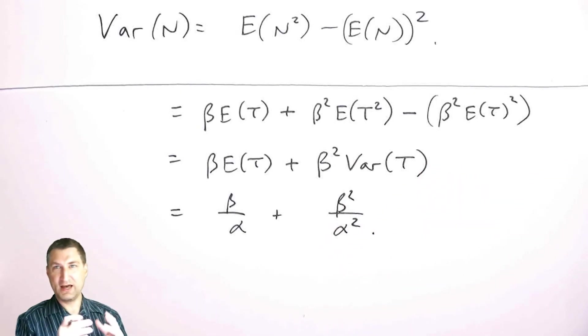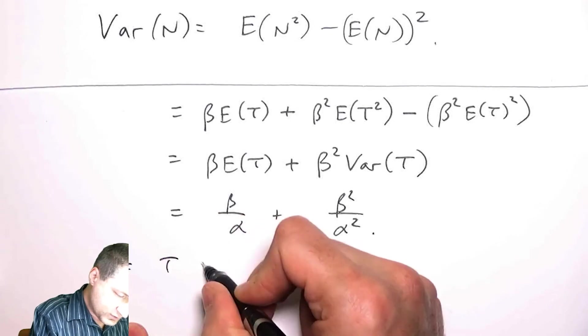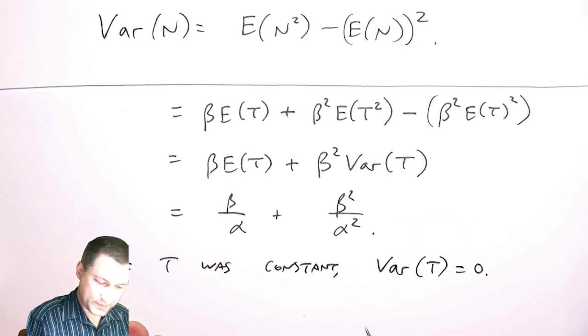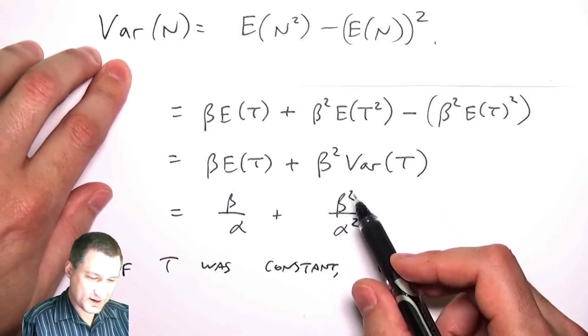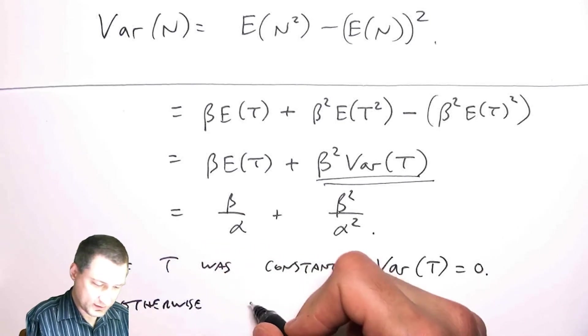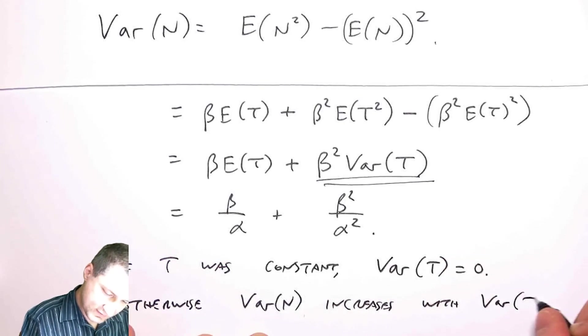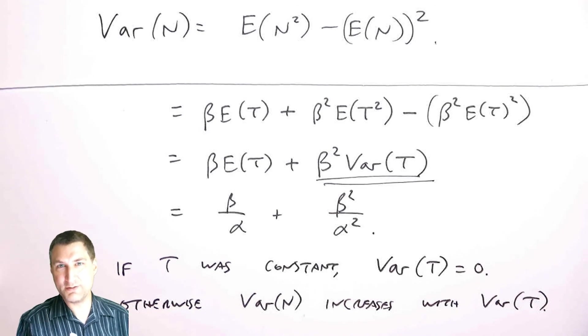So what is the idea here? The idea here is I'm trying to compute the variance of N. Now, if T was not random, right? So basically, if it took the same amount of time to service each person, then the variance of T would be zero. So if T was, you know, constant, not variable at all, then the variance of T would equal zero. But if T is not constant, that means it has some variance. And that means that the variance of N kind of goes up with the variance of T. So otherwise, it doesn't change the mean, but otherwise, the variance of N increases with the variance of T, right? It has some baseline variance, and then it increases as the variance of T gets bigger. So the variability in T can only make the variability in N worse.